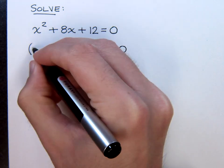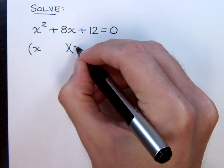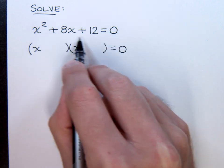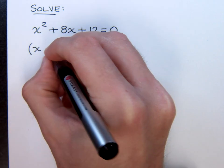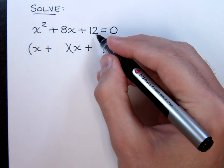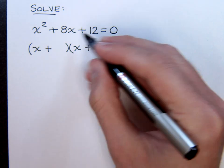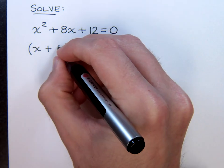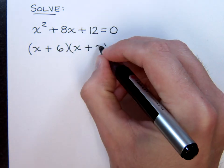We know that x squared should break down to be x and x. Everything here is positive so that tells me that both of these signs in here need to be positive. And then we have to break down the 12. Numbers that multiply to give you 12 and add to give you 8 will be 6 and 2.